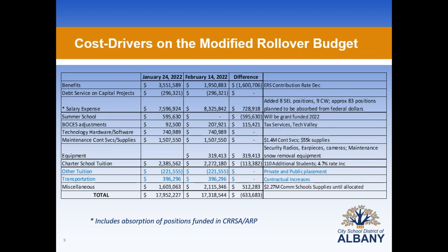We have also shown other categories this time around, including other tuition expense — which is private and public placement — and transportation contractual increases with our providers, totaling that $17.3 million year-over-year increase, which is actually a decrease of $633,000 from our original modified budget.